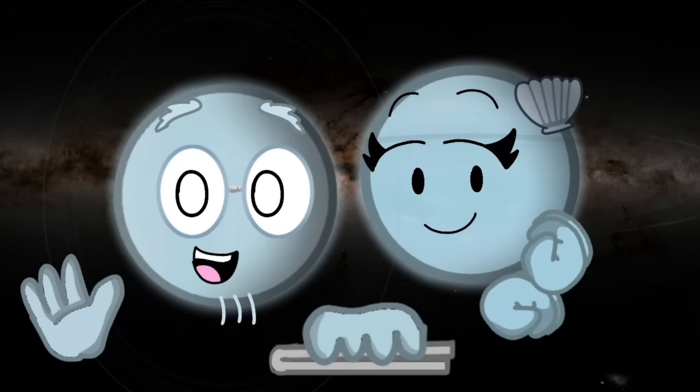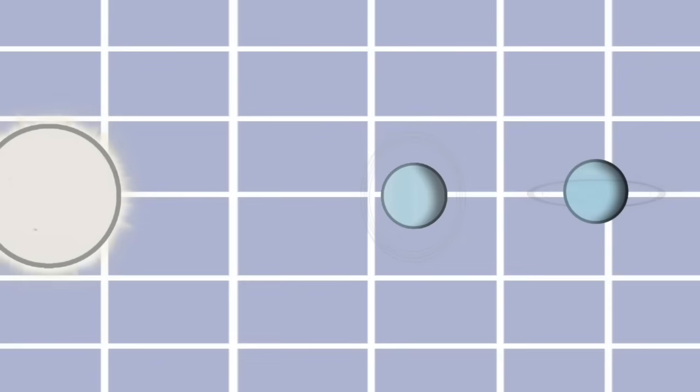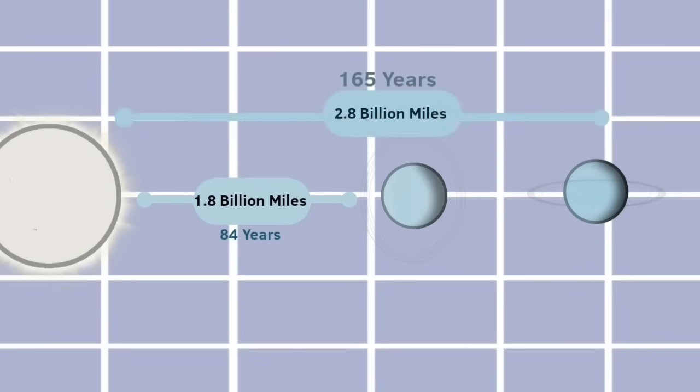My name's Uranus. And I'm Neptune. We're the furthest planets from the sun and the coldest in the solar system. My distance from the sun is 1.8 billion miles, and my orbit lasts 84 Earth years. Meanwhile, I'm over 2.8 billion miles from the sun and take 165 years for my single revolution around the sun.